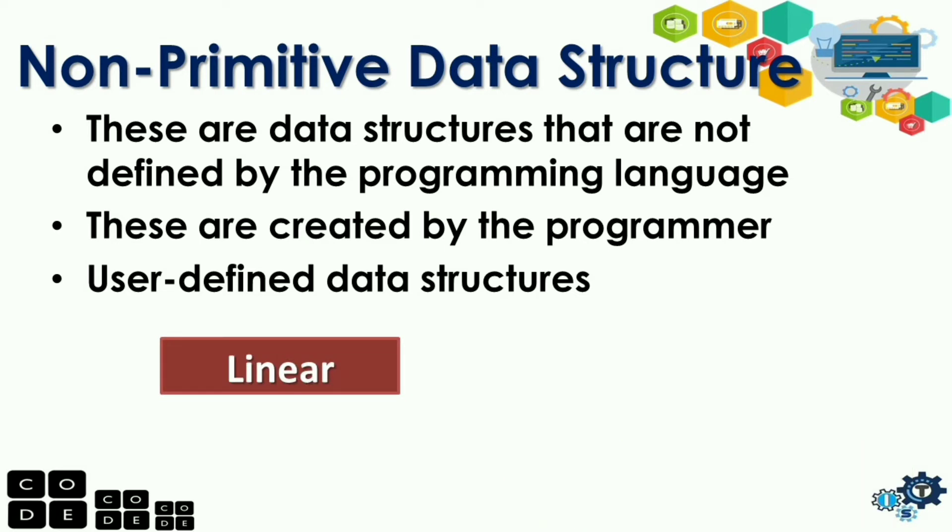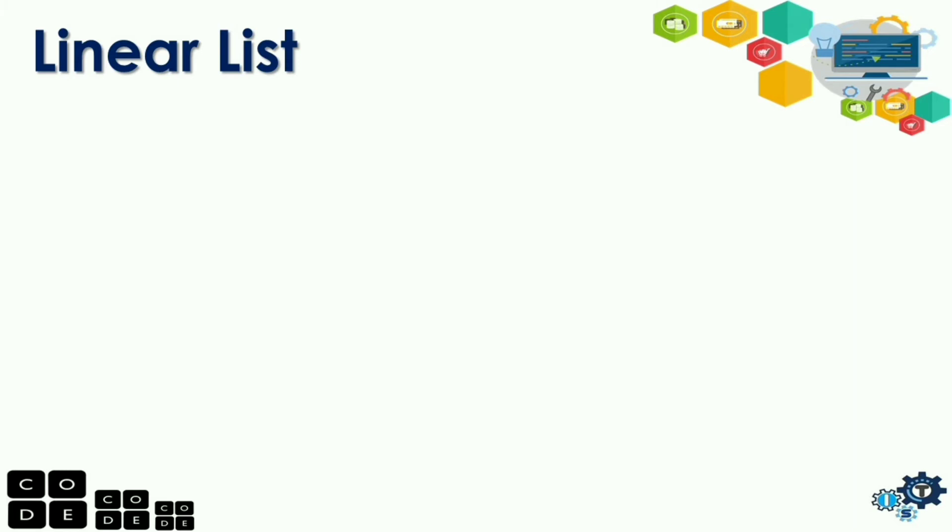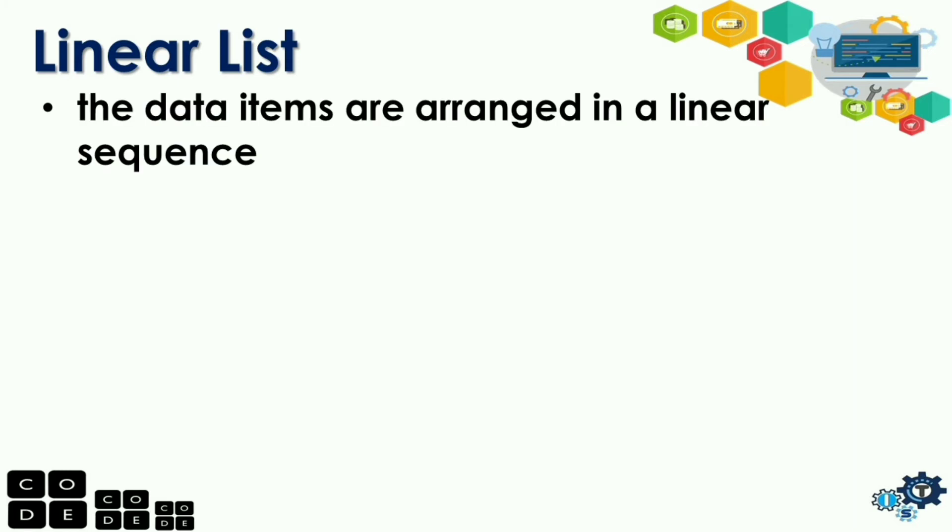So, non-primitive data structure has 2 types. Meron siyang linear and non-linear data structure. So, ano yung linear data structure or linear list? These data items are arranged in a linear sequence.